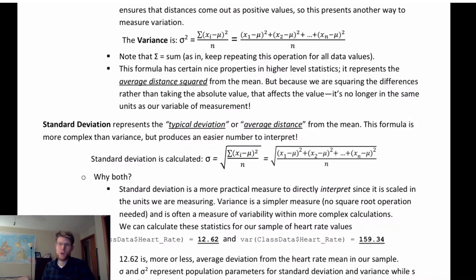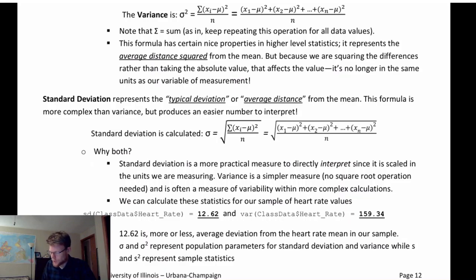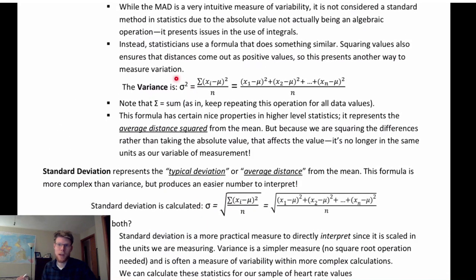We think of standard deviation as the typical or average distance from the mean, approximately. So why do we have both variance and standard deviation? Standard deviation is more practical because it's in the units of the variable being measured. But the variance is a simpler calculation, and whenever measuring variability within a larger statistical process or framework, we often use variance because we don't need the extra step of taking the square root. Standard deviation is better as a standalone measure, whereas variance is better within larger calculations.